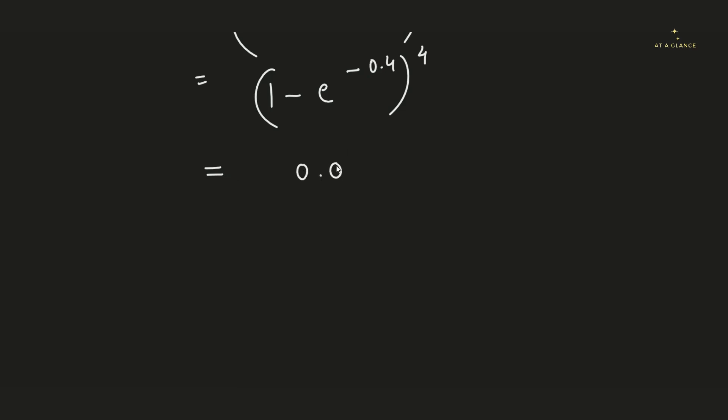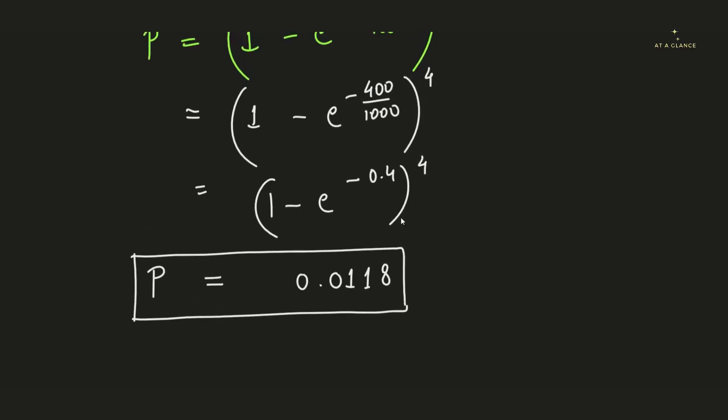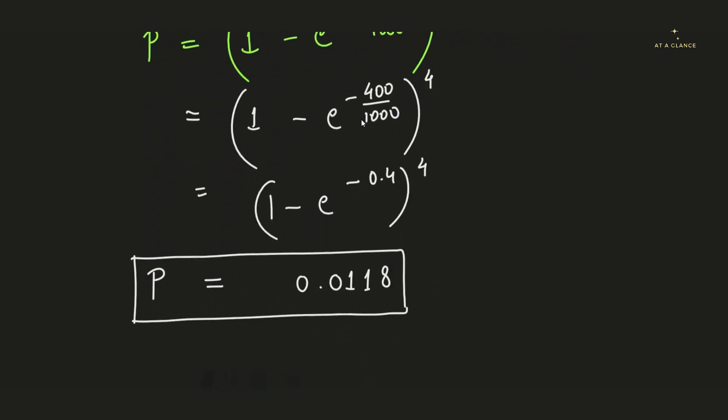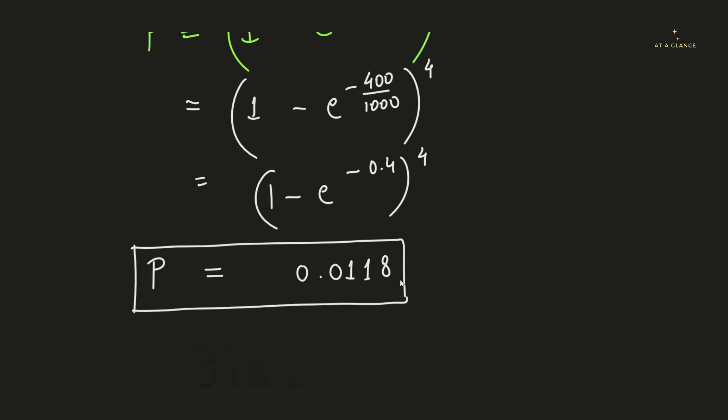So this is the probability that we have got, and what exactly is this? This is the probability of getting false positives for this particular instance. For this particular scenario, that means if we have total 1000 cells and we have 100 items to feed into that particular Bloom filter, and if we are using 4 hash functions, then the probability of getting false positives is 0.0118. So I hope it is clear to you all how to solve this kind of problem.